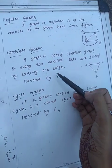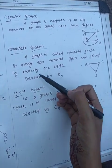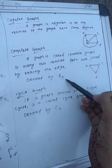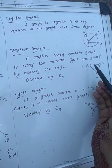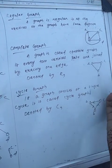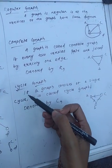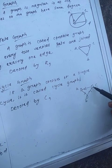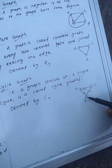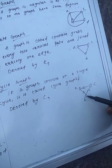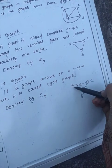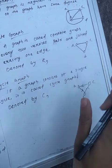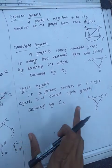If a graph consists of a single cycle, it is called a cycle graph. A cycle means when a direction comes from A to B, B is directed to C, and C back to A. So A, B, C form a complete cycle, and we can say it is a cycle graph, denoted by Cn.